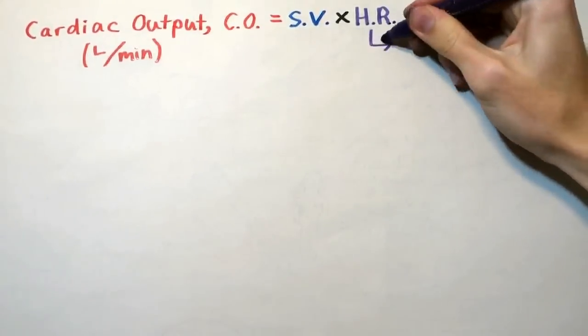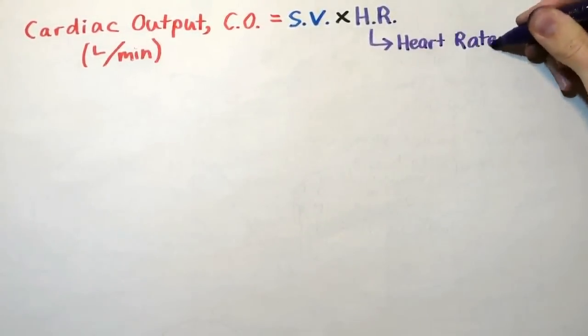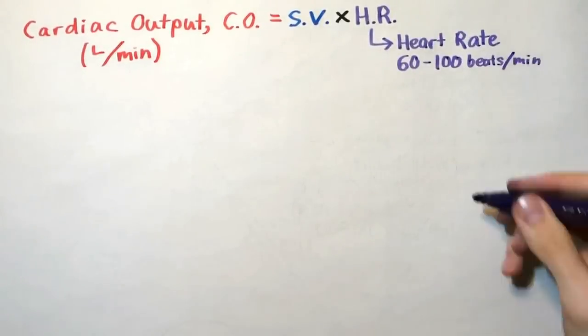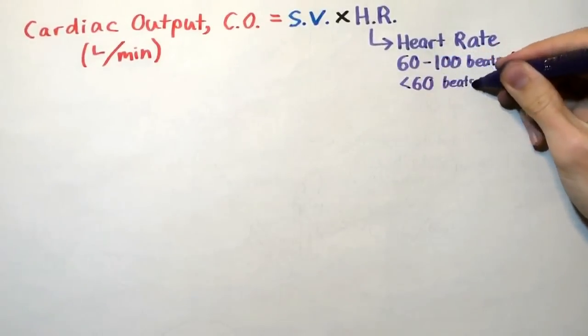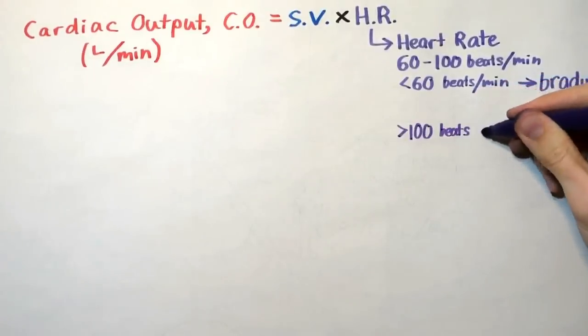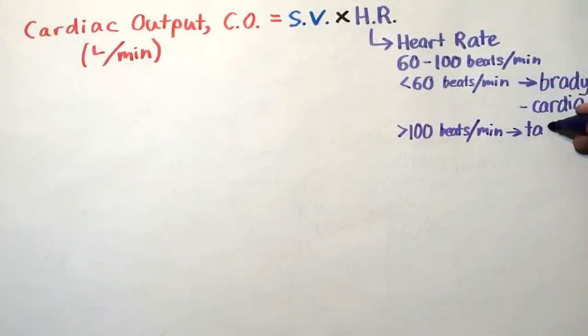The heart rate is the number of contractions per minute that occur in the heart. The average heart rate of an adult ranges from 60 to 100 beats per minute. Having a resting heart rate that is lower than 60 beats per minute is defined as bradycardia, and having a resting heart rate that is higher than 100 beats per minute is defined as tachycardia.